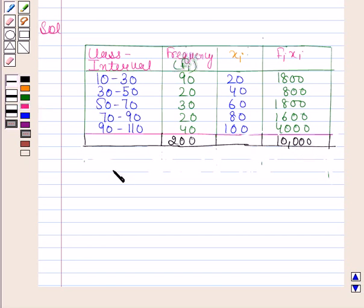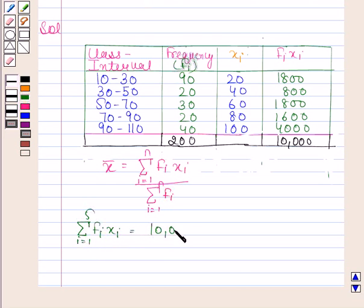We know that mean, that is X bar, is given by summation i goes from 1 to n of Fi Xi divided by summation of Fi. Now here, summation Fi Xi is equal to 10,000, and summation Fi is equal to 200.